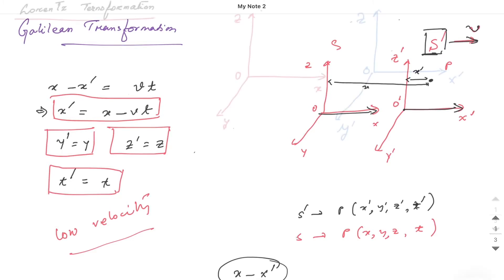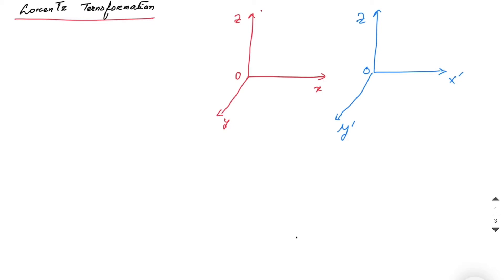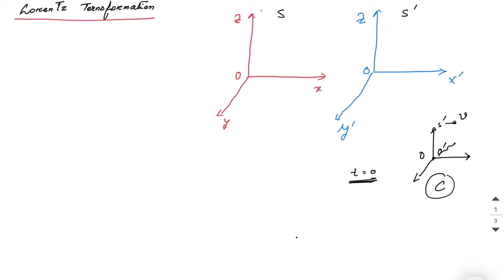To understand Lorentz transformation, consider two frames S and S'. When time t = 0, they were at the same position — the origins O and O' coincided. Frame S' travels with velocity v. At t = 0, a pulse of light was emitted, traveling with speed c. The light reaches point P after time t.